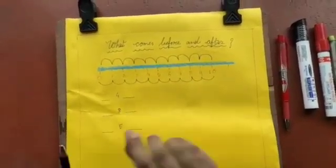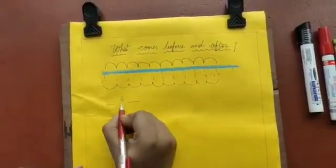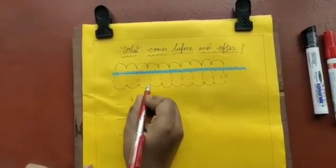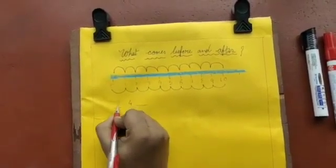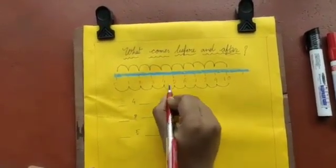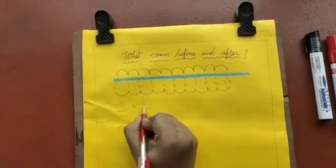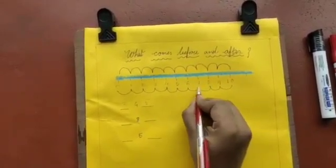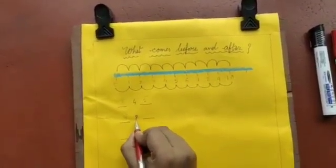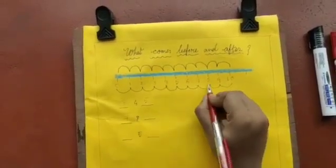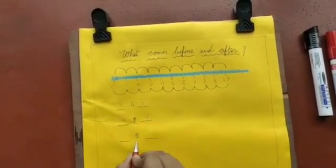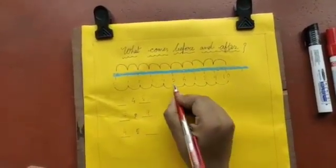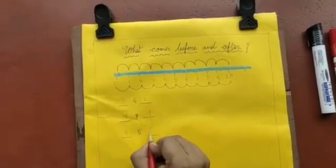3, 4. Can you tell me this? Which number comes before 4? Before 4? It's 3. And which number comes after 4? Yes, it is 5. Which number comes before 8? Yes, it is 7. And which number comes after 8? It's 9. Before 5 is 4, and after 5 is 6.